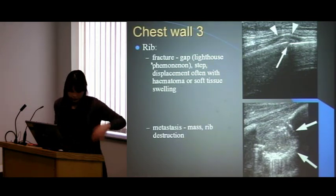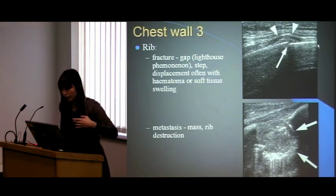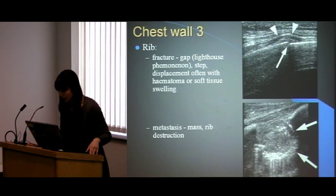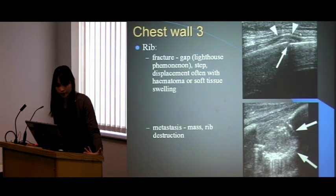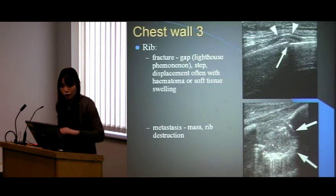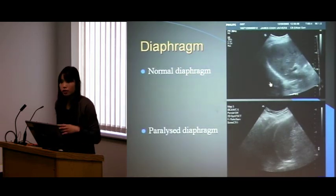For rib fractures, scanning a rib end-on: you see the anterior cortex and a step — called the lighthouse phenomenon — basically a gap, with associated hematoma just over here. The other thing to look for is rib metastasis: scanning along the rib you might see a large soft tissue echogenicity — most likely bad news — a mass that destroys the rib.